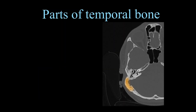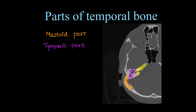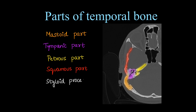Before moving on to actual structures of the middle ear, we will see the parts of the temporal bone. This is the temporal bone made of 5 parts: the mastoid in orange, the tympanic part in pink, then the petrous part, the flattened squamous part, and in lower sections we can see the styloid process.